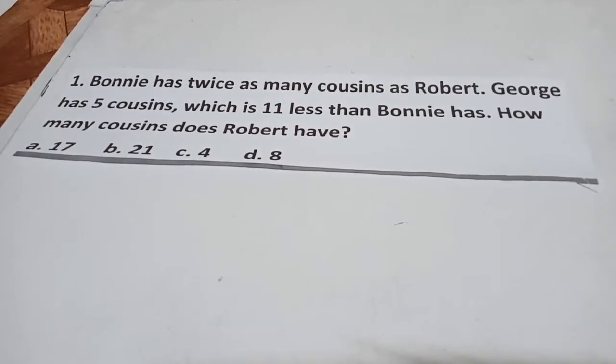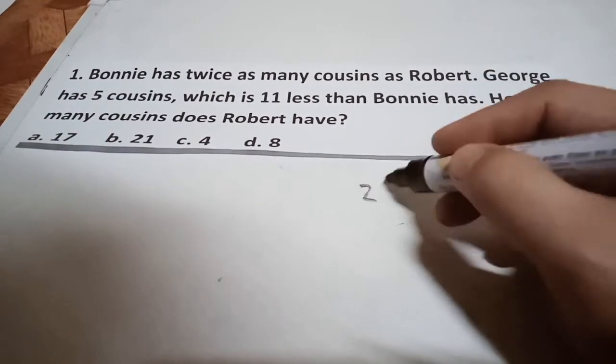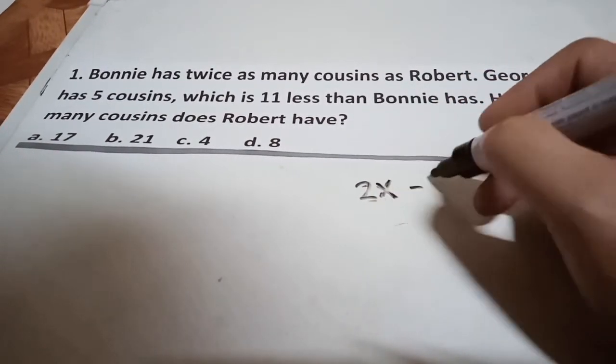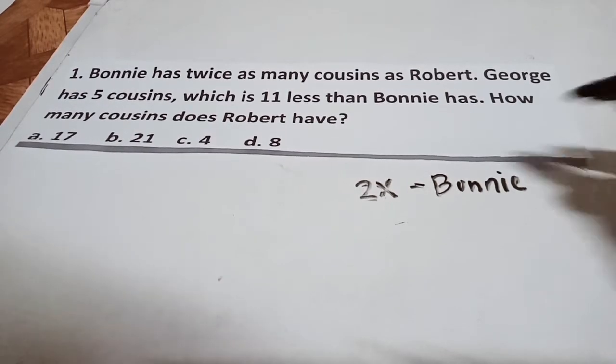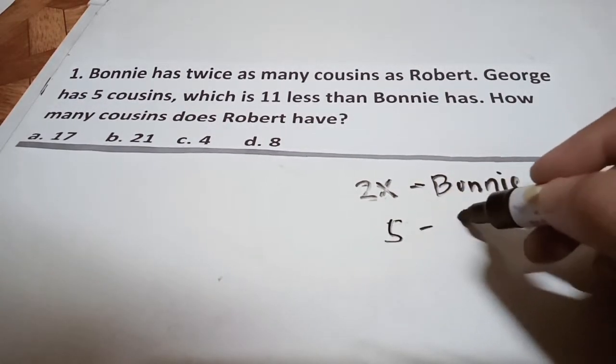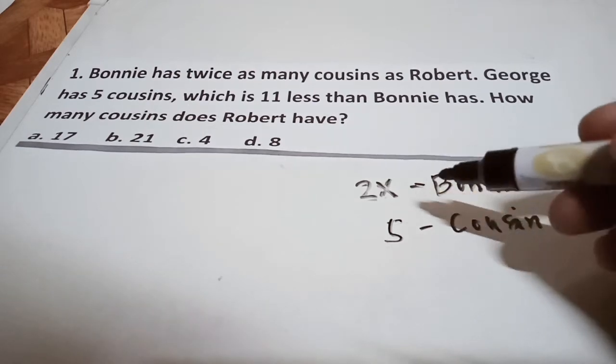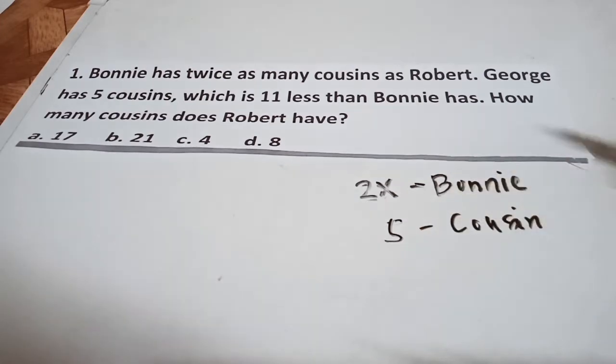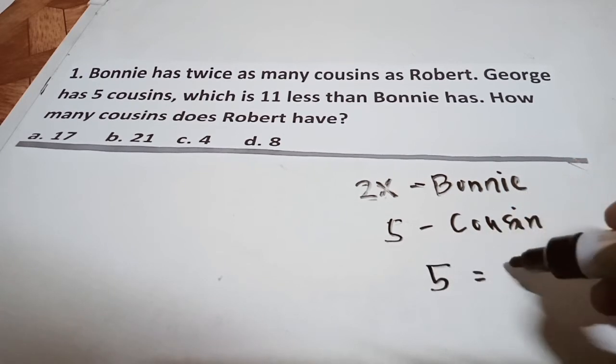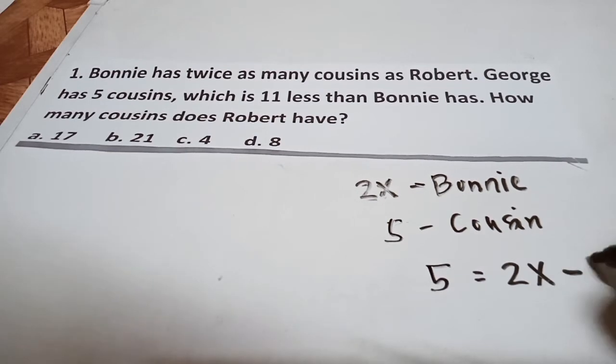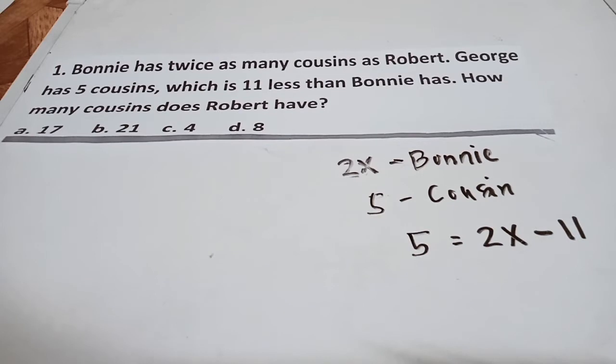Bonnie has twice as many cousins as Robert. George has five cousins, which is 11 less than Bonnie has. How many cousins does Robert have? All you have to do is represent 2x for Bonnie. Let's have an equation. George has five cousins. She has five cousins, which is 11 less than Bonnie.